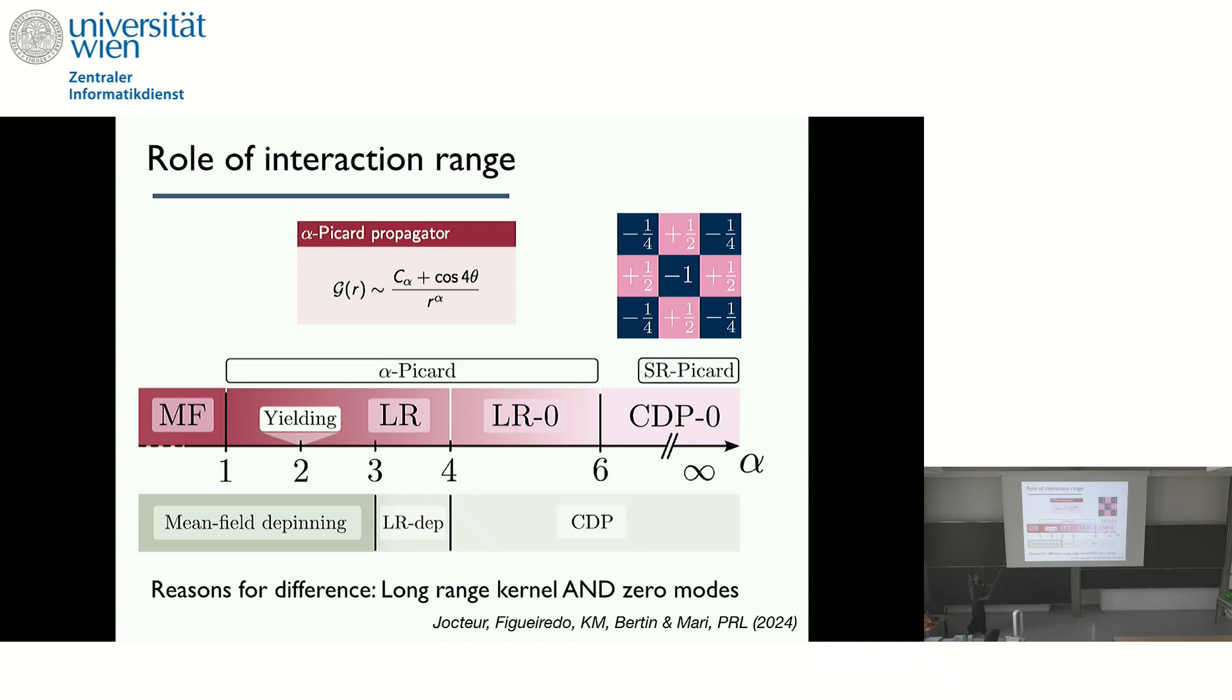So to understand whether this is just a question of range, we did an analysis with what we call alpha-Picard model. And so instead of having the usual Eshelby propagator with R to the alpha being alpha being 2, we vary alpha. And we see that for alpha very large, we go to something very, very short range. And we can also study just next-neighbor interactions, which is this model, which we call CDP0. And for all of these models, we get different scenario than for the CDP universality class, even for next-neighbor interactions.